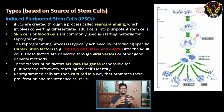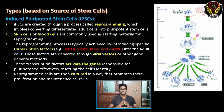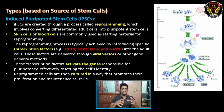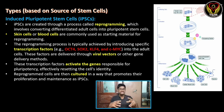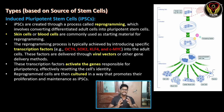Induced Pluripotent Stem Cells — this is a very booming topic. So, natural stem cells are found in the body, but induced pluripotent stem cells are synthetic stem cells. They are lab-made, not naturally occurring.